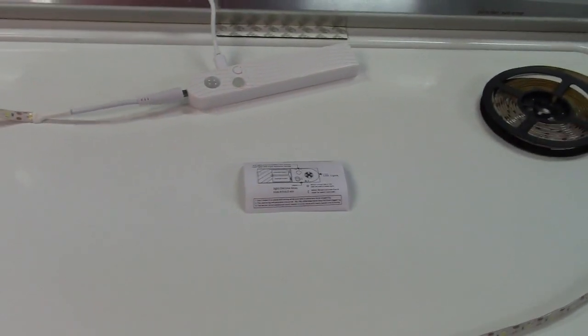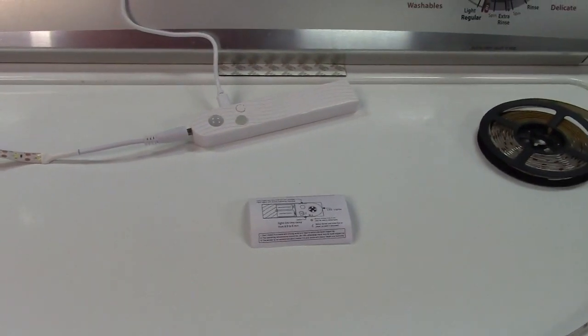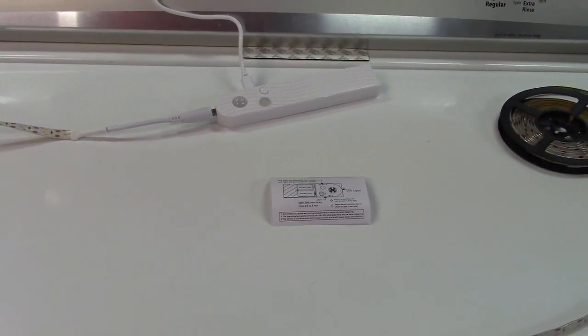Once again, this was the CF Grow Under Cabinet or Closet Light. Comes in a 2-pack, 10-foot length each.